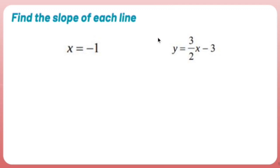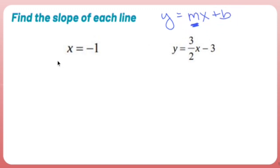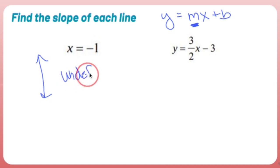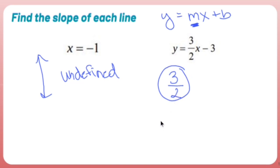Find the slope of each line from slope-intercept form. If I remember slope-intercept form, when y is all by itself, the number in front of x is my slope. The equation x equals negative 1 has no y, so if I graphed it, it would be a vertical line — slope is undefined. Over here, y is all by itself, and the number in front of x is three over two, so the slope is 3/2.